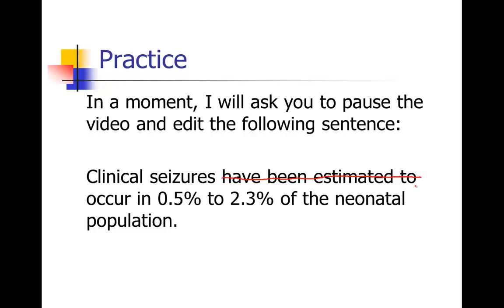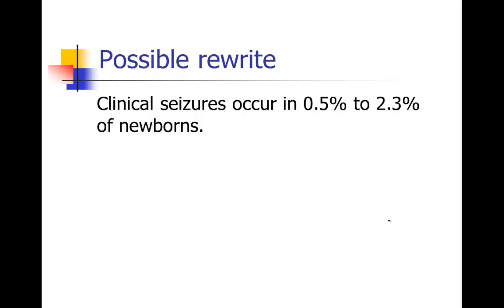And then 'occur in 0.5% to 2.3% of the neonatal population' — you might think 'neonatal population' sounds really important and leave it untouched. In fact, the first time I edited this sentence I missed this. But what is a neonatal population? 'Neo' means new, 'nate' means born — so this is just a fancy way of saying 'newborns.' See how much more direct and easy that is to read: clinical seizures occur in 0.5% to 2.3% of newborns. Hopefully you've got something similar — you may not have an identical rewrite, but hopefully something similar.